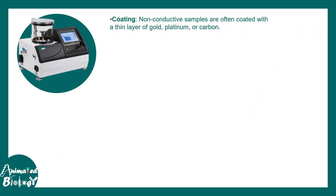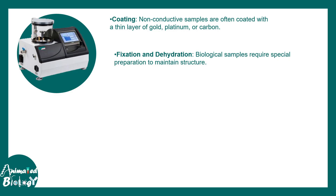Every biological sample placed under the SEM must be coated, because biological samples are non-conductive. They are coated with osmium tetroxide, gold, platinum, or even a thin layer of carbon, using sputter coating equipment in a vacuum chamber. Additionally, special fixation and dehydration steps are required, using special fixative agents such as Bouin's fixative for SEM sample preparation.